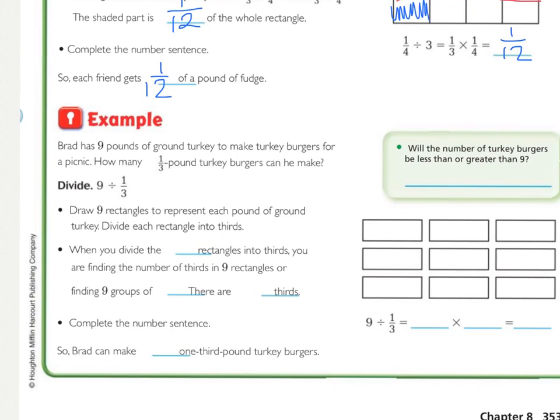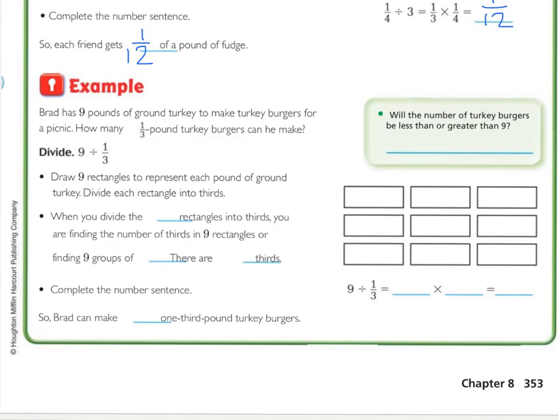So let's look at this example. Brad has 9 pounds of ground turkey to make turkey burgers for a picnic. How many 1/3 pound turkey burgers can he make? Press pause, underline what you're being asked to find, circle the important information, and then also see if you can answer the green box on the right. You should have underlined how many 1/3 pound burgers can he make, and then even in the question where you're being asked to find is where you find the 1/3, and then how much does he start with? He starts with 9.